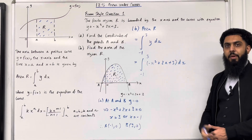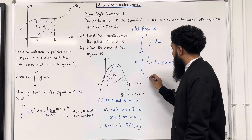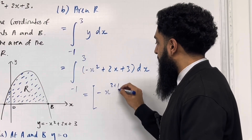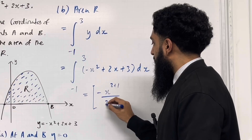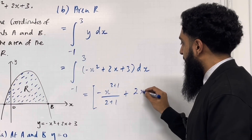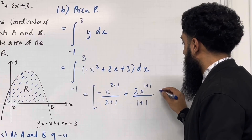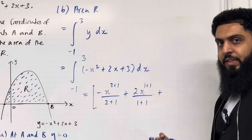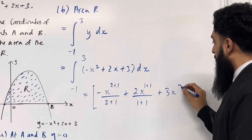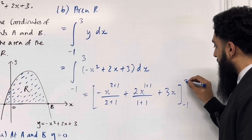I'm going to apply term-by-term integration. So I've got: open square bracket, -x to the power 2+1 over 2+1, plus 2x to the power 1+1 over 1+1, plus — now 3 is a constant, so this integrates to 3x — close square bracket, with lower limit -1 and upper limit 3.